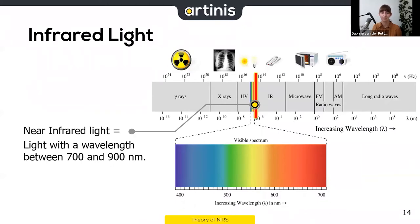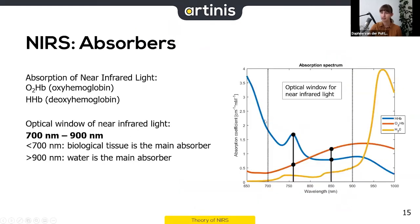Near infrared light refers to light with a wavelength between 700 and 900 nanometers. Looking at the broader spectrum of wavelengths, it sits in this range. We can use it to calculate the concentration changes of oxy- and deoxyhemoglobin because these molecules absorb light in the near infrared spectrum.